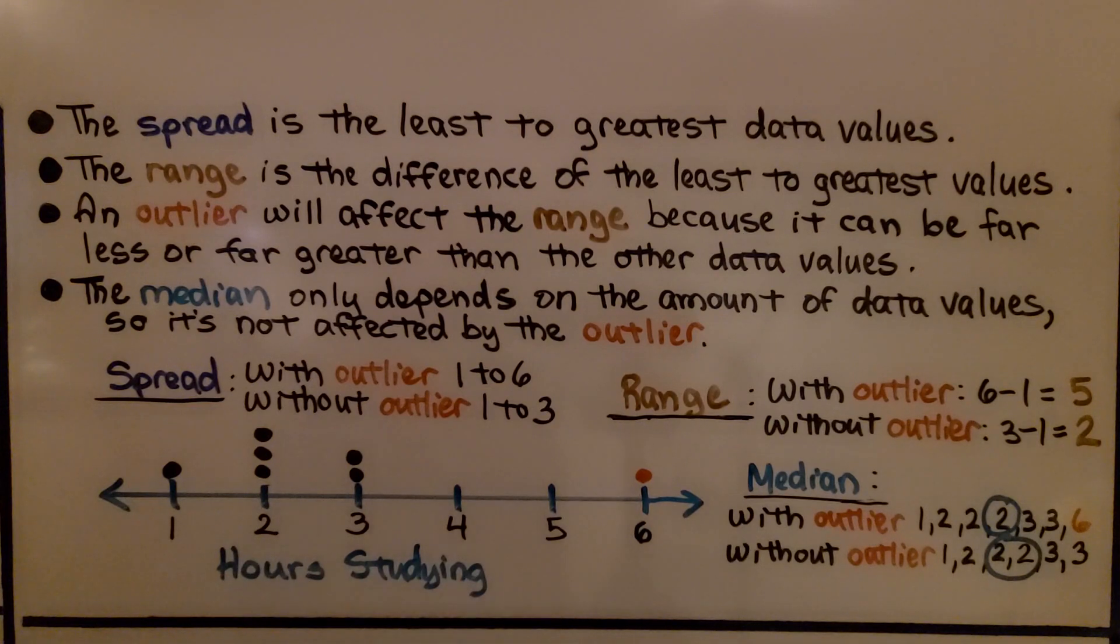So the outlier will affect the range. But look at the median. With the outlier, our median is two, and without the outlier, our median is two. The median wasn't affected by the outlier.